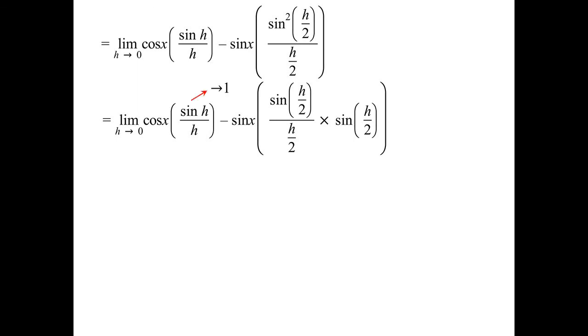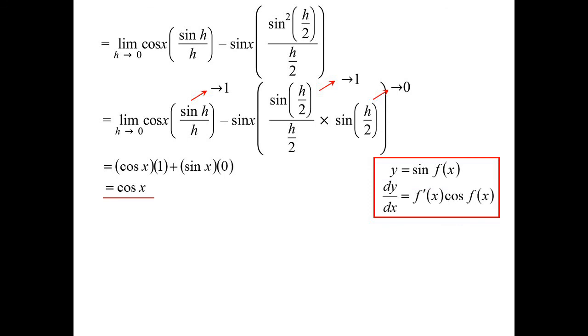So the first bit, the sine h on h approaches 1. The sine h on 2 on h on 2 also approaches 1. But just the sine h on 2 by itself approaches 0. So we end up with cos x times 1 plus sine x times 0, which equals cos x. In general, sine of function x, you want to differentiate sine of function x? You differentiate the angle. So that derivative goes out the front. The sine function becomes a cosine function.